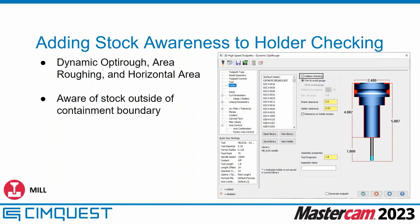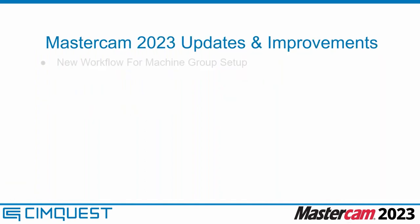The last thing I'll touch on here is adding stock awareness to holder checking. This is currently only for the dynamic OptiRough, area roughing, and horizontal area toolpaths, but it is a sign Mastercam will add this to the others. In previous versions, Mastercam did not take into account stock outside the containment boundary. With this enabled, Mastercam now checks any portion of the tool holder against any material that exists outside of that containment boundary. Now I'll kick it over to Eric for the new workflow for machine group setup.